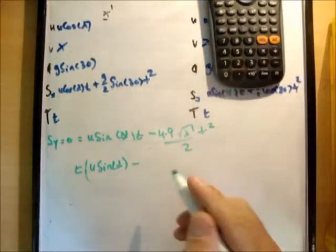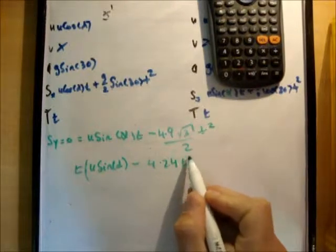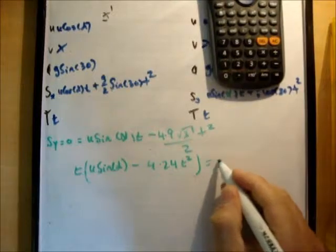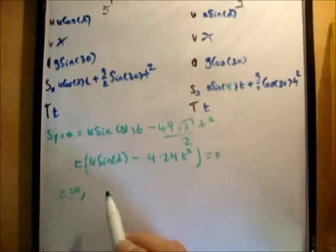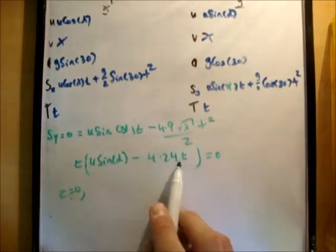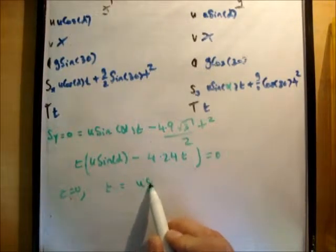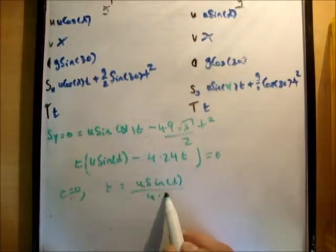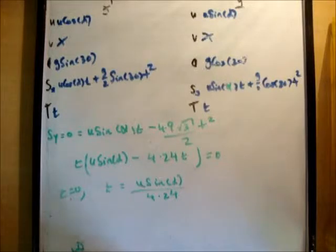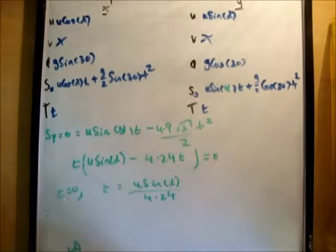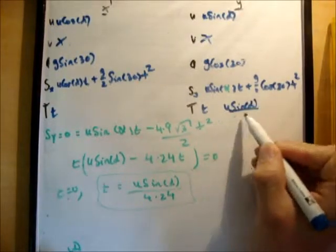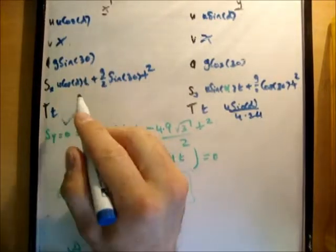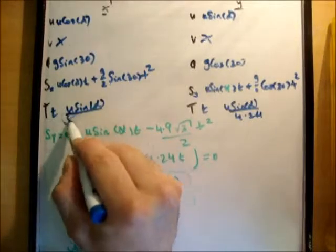So we're going to get t times u sine alpha minus 4.9 times root 3 over 2. So that is 4.24. And we know that's equal to 0. So two things multiplied together to make 0. One of them must be 0. So in this case this t here is 0. And if we rearrange this we'll get that t is equal to u sine alpha over 4.24. Now is that correct? Well it is, because if you think about it, at t is equal to 0 the particle hasn't actually left the ground yet. So that's correct. So this expression here must be the expression for when the particle is at its maximum range. So I'm just going to note that here. u sine alpha over 4.24.